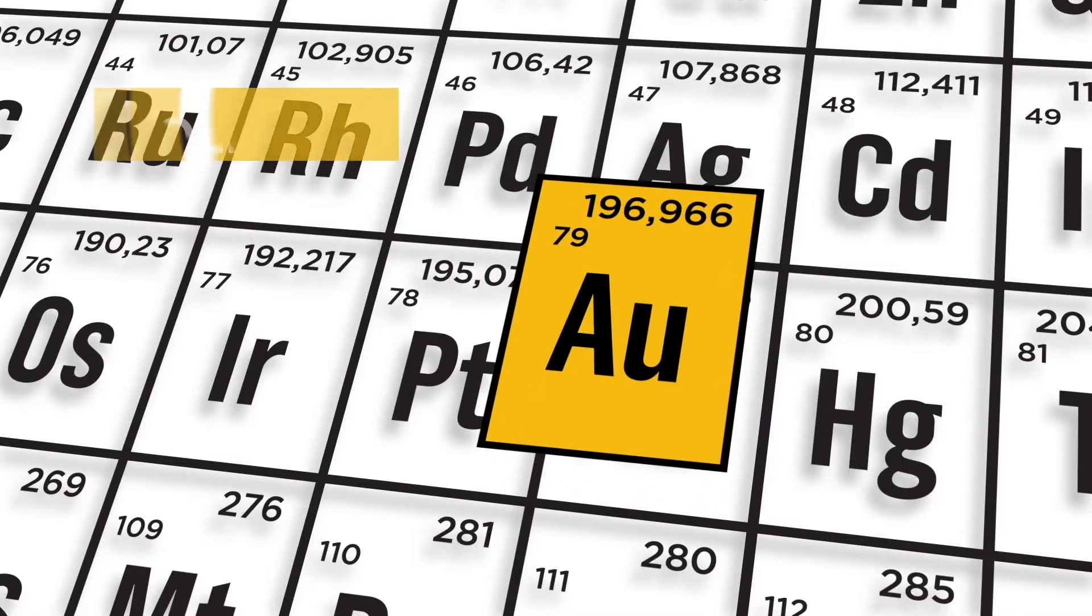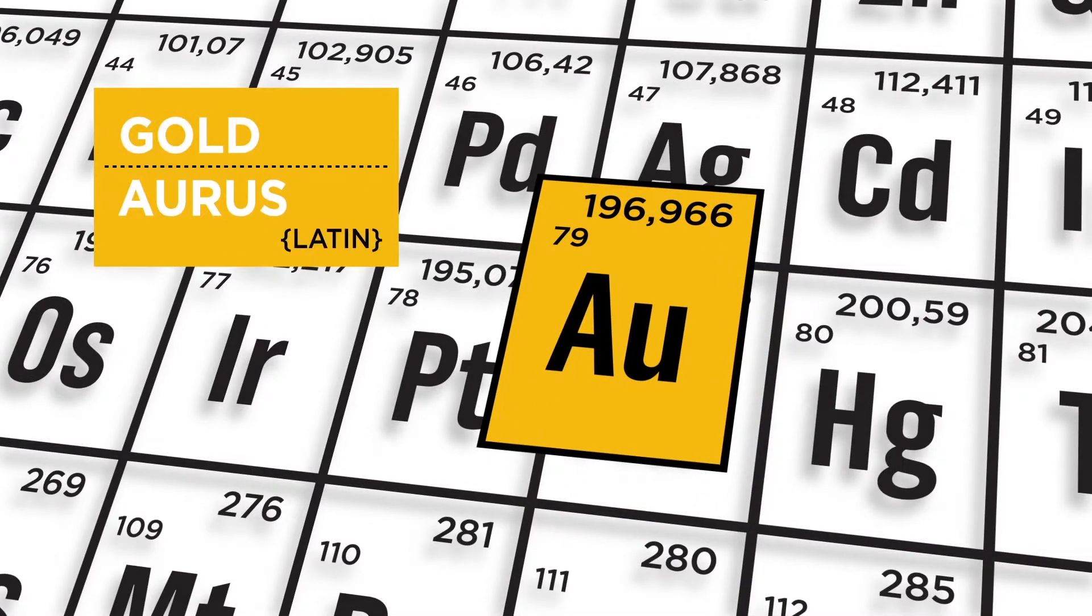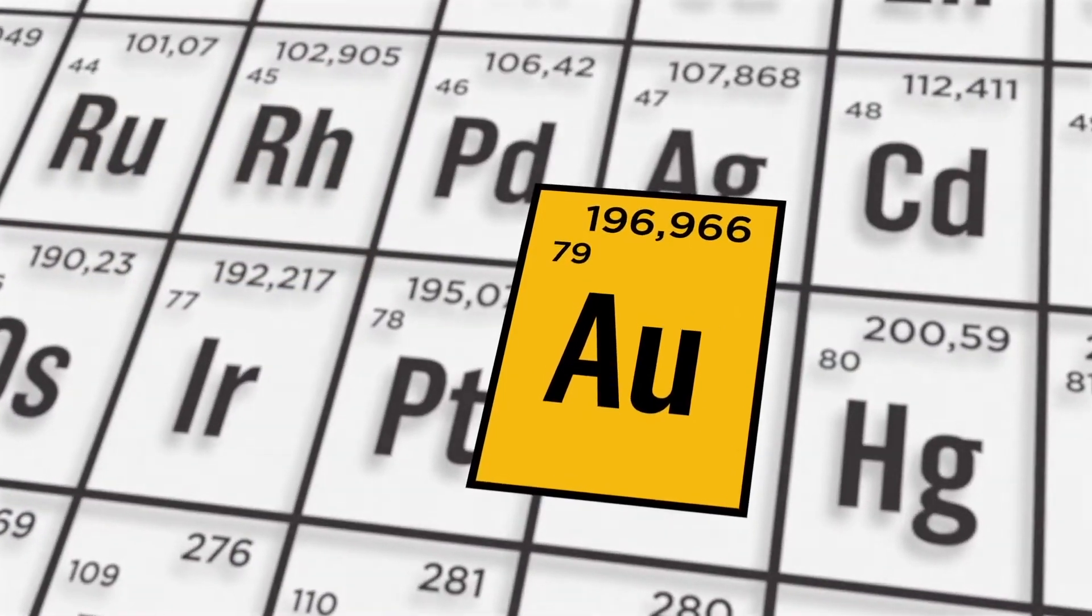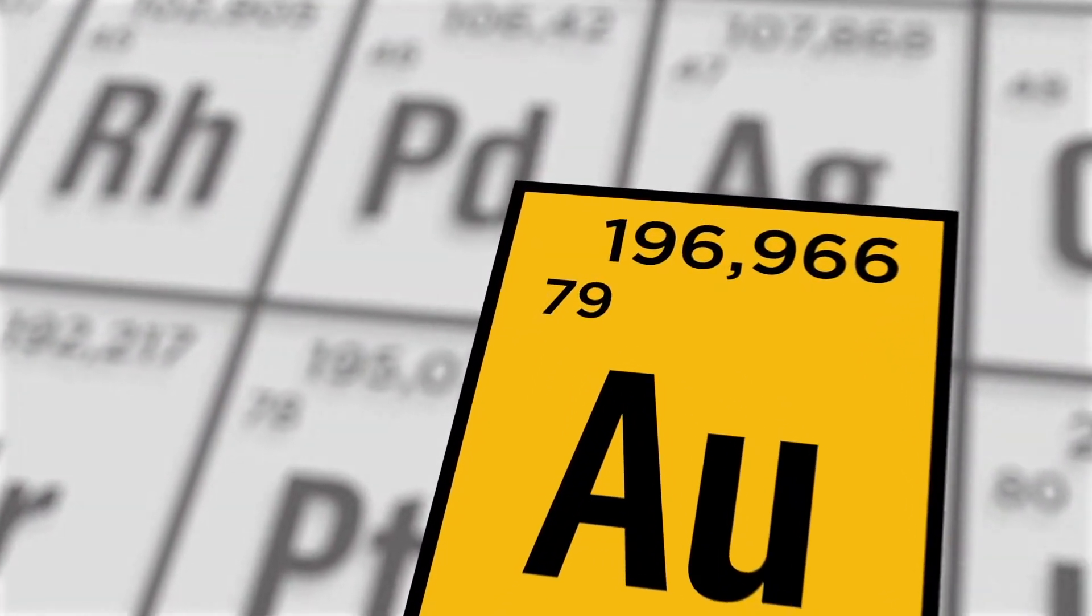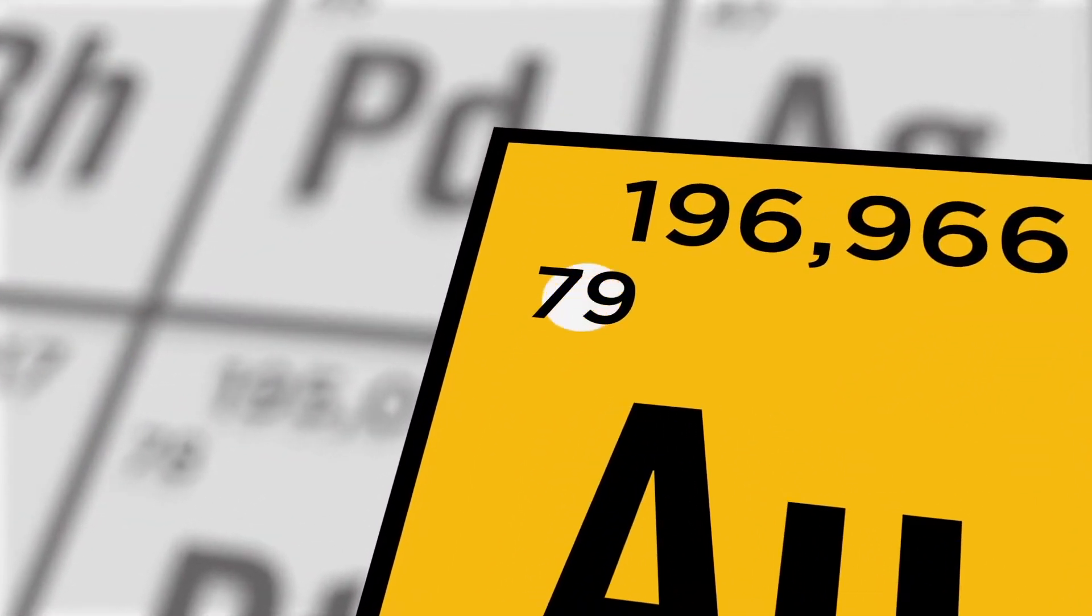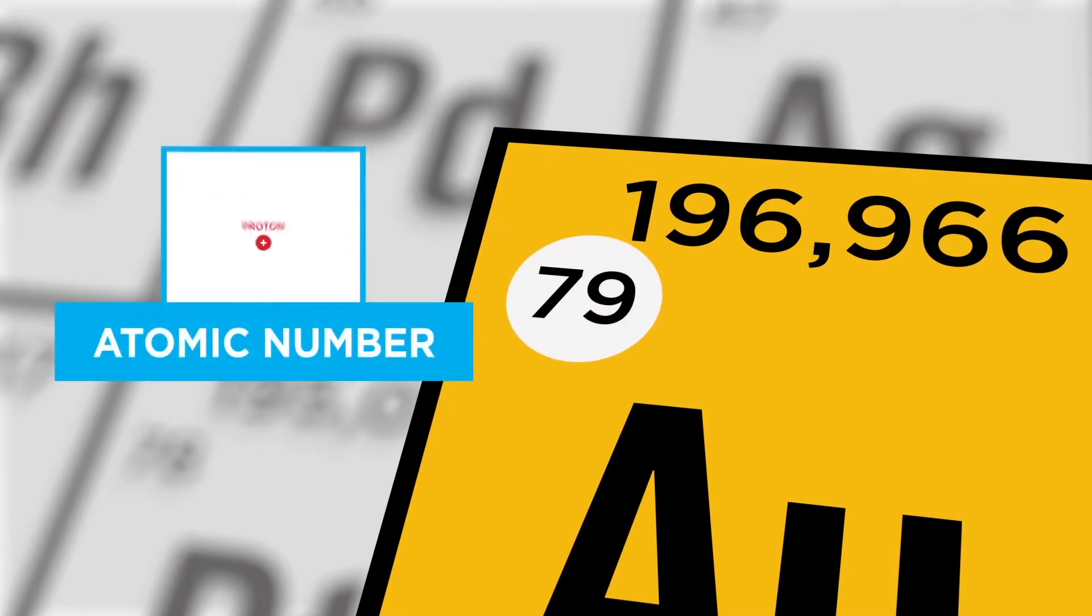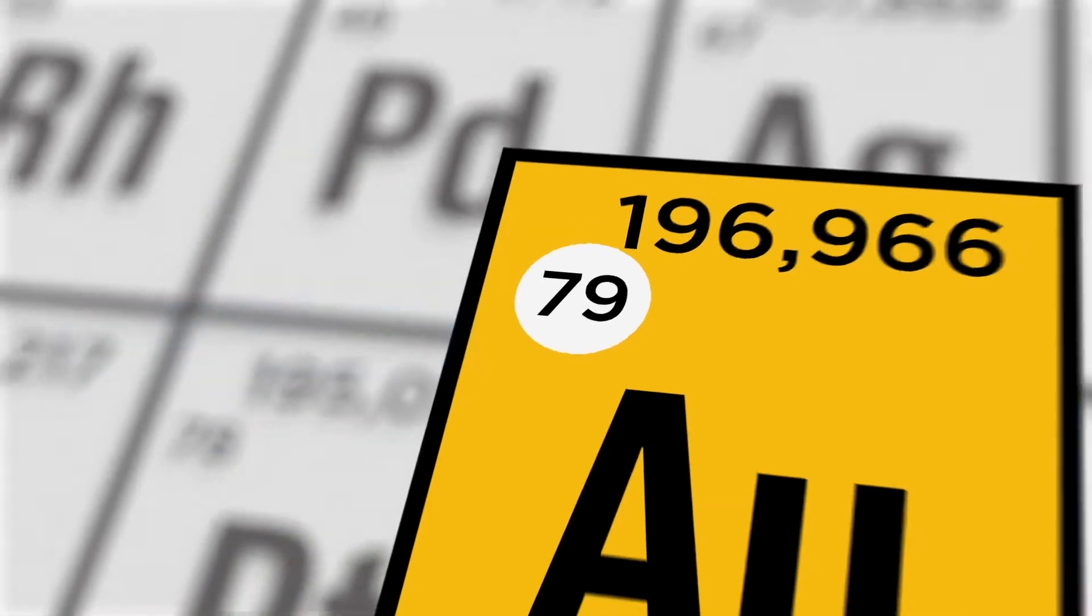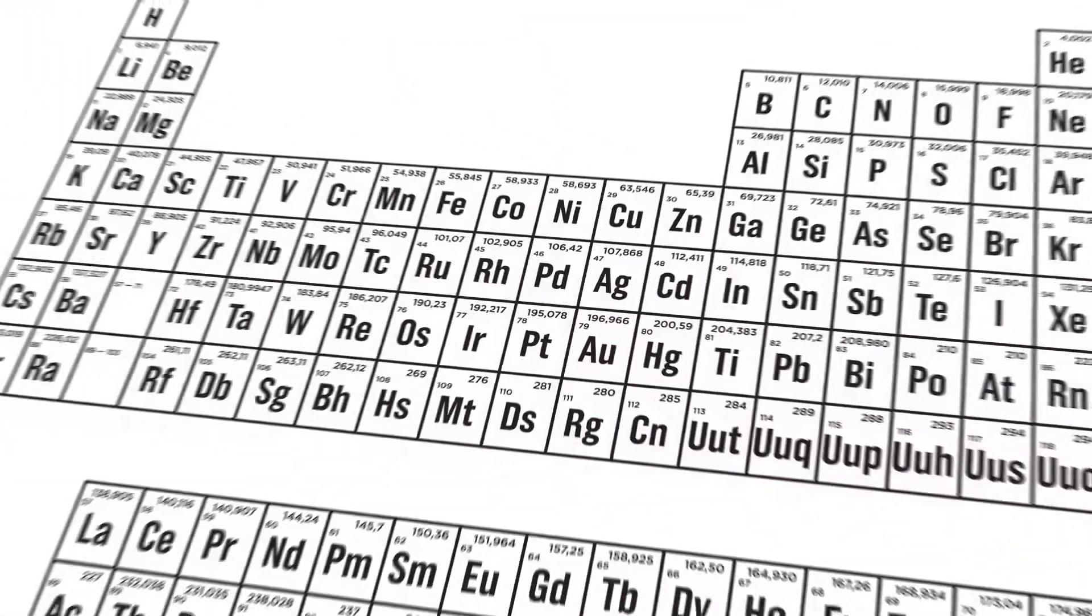Or that the chemical symbol for gold is Au because in Latin it was called auris. And also some know the meaning of the numbers that appear next to the letters, like for example the atomic number, which is the number of positive and negative charges of the atom. But what exactly is the periodic table?